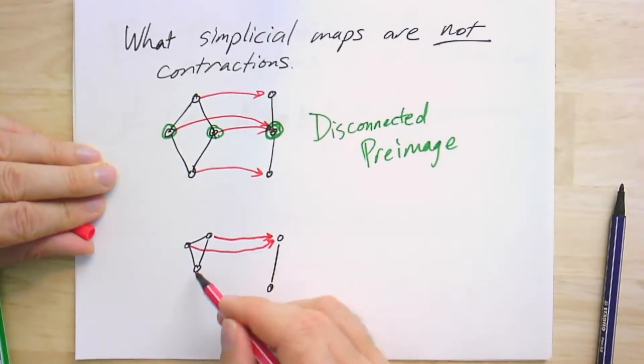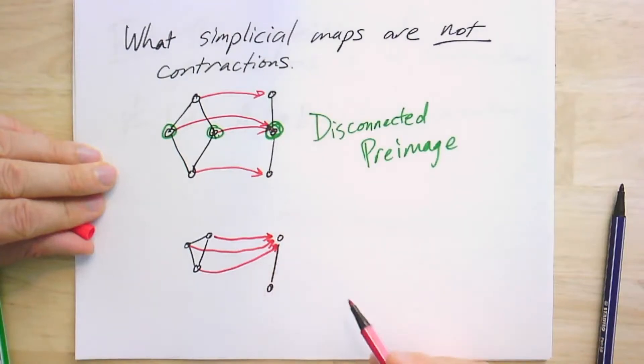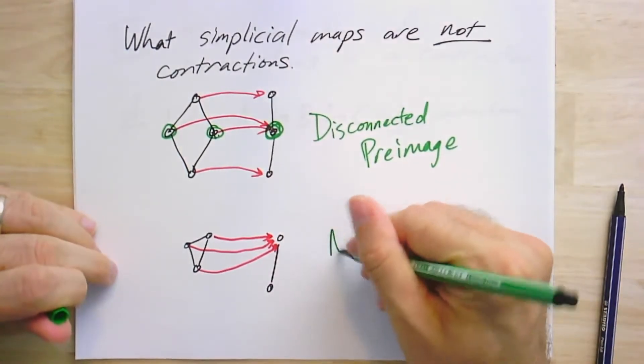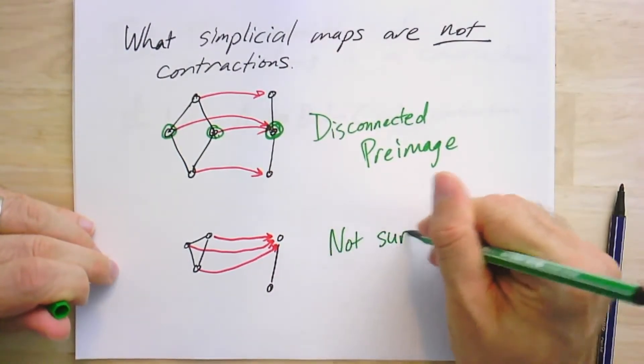For example, if I map all three vertices to the same vertex, that is a simplicial map. It maps every vertex and every edge to this one vertex. However, it's not a contraction because it's not surjective.